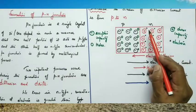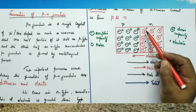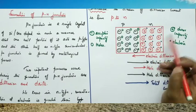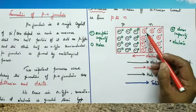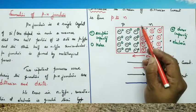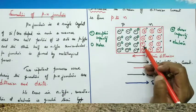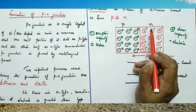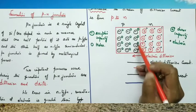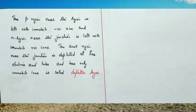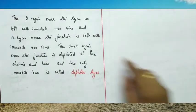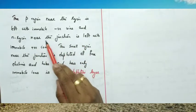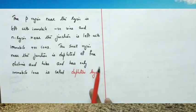If electrons move from N to P, in the N region they leave behind immobile positive charges representing the donor impurity. Similarly, if holes move from P to N, they leave a net negative charge in the P region. Thus, the P region near the junction is left with immobile negative ions and the N region near the junction is left with immobile positive ions.